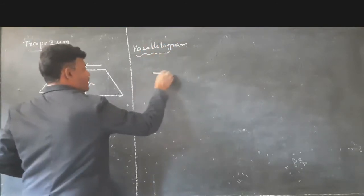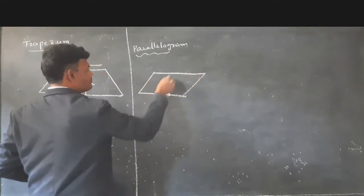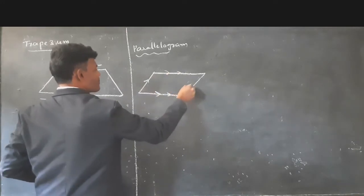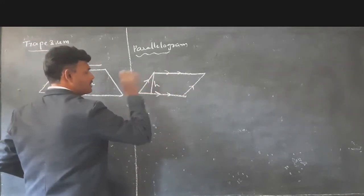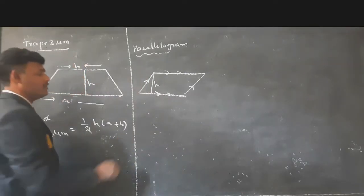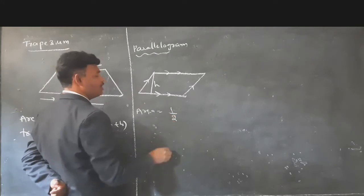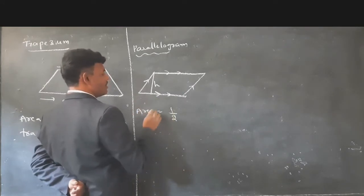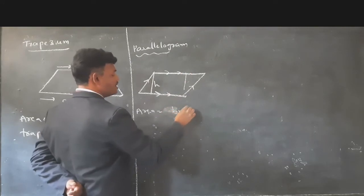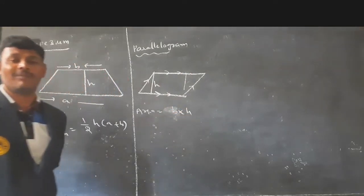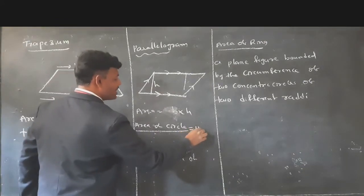In a parallelogram, the opposite sides are equal. The area of a parallelogram is base into height. The area of a circle is pi r square, and the circumference of a circle is 2 pi r.